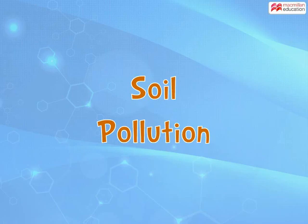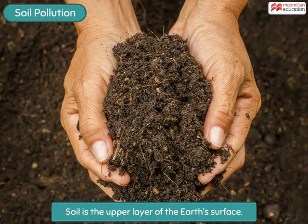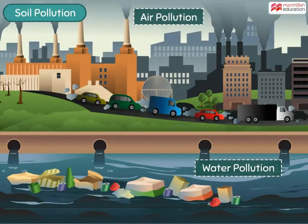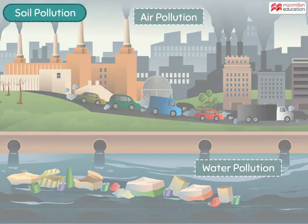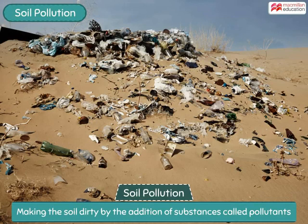Soil is the upper layer of the earth's surface. Just like all the other parts of our environment, soil too is getting polluted to a great extent. Making the soil dirty by addition of substances called pollutants is called soil pollution.